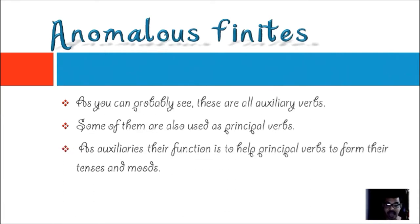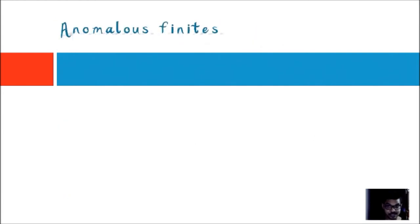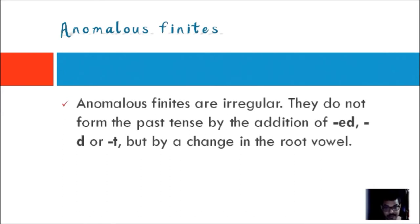There comes our third point. As auxiliaries, their function is to help principal verbs to form their tenses and moods. All these tasks are being performed by anomalous finites. As anomalous finites they have other functions too, which we'll discuss. Anomalous finites are irregular — they do not form the past tense by the addition of -ed, -d, or -t.